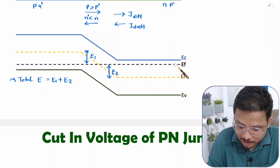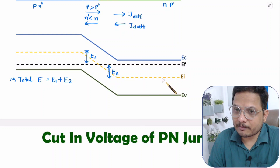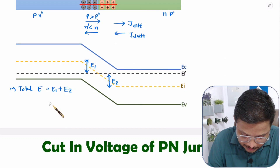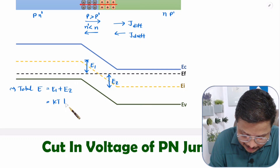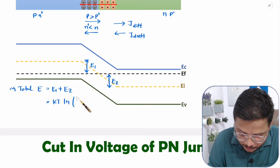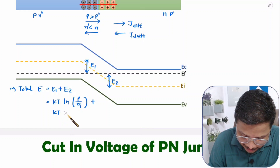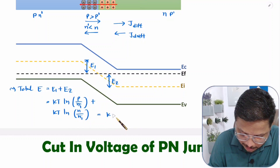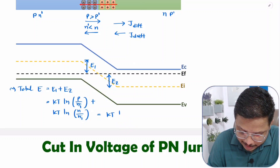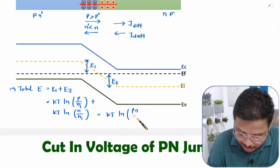So E1 equals KT ln of P divided by NI, and E2 equals KT ln of N divided by NI. So KT is common, and inside the ln these multiply to give PN divided by NI squared. That is how energy band tilt is happening over here.